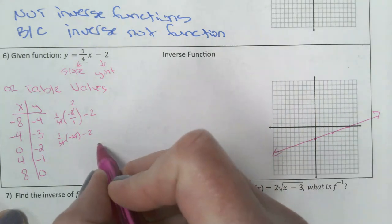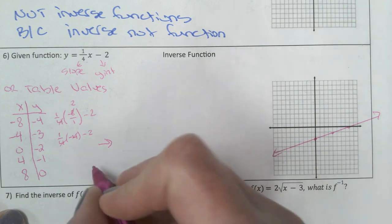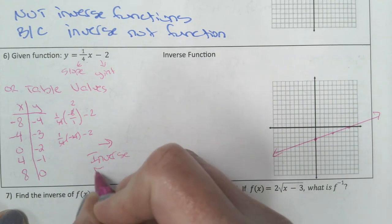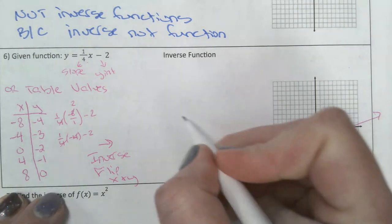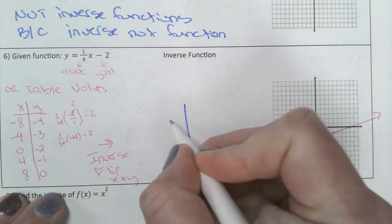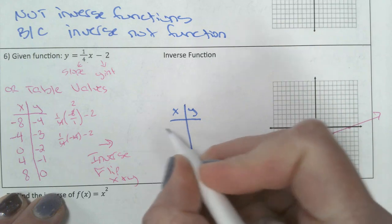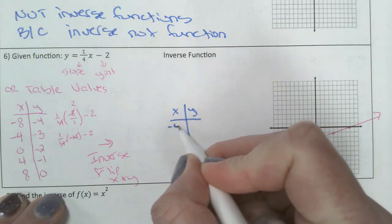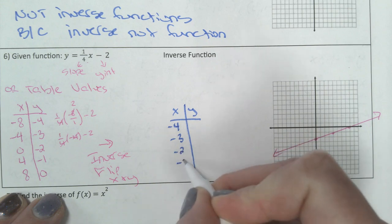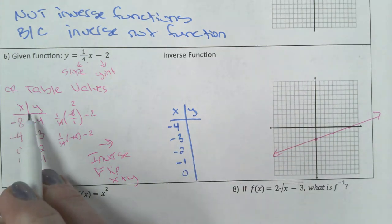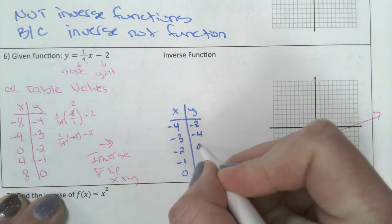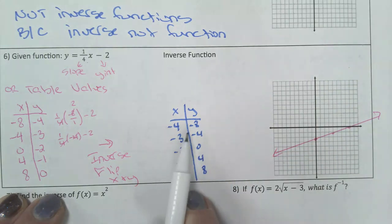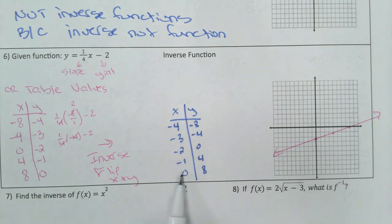When you want to find the inverse, you could just flip x and y. That is one option. So when I flip x and y, for my x column: negative 4, negative 3, negative 2, negative 1, 0. Those are the y's. And then the y column are the x's: negative 8, negative 4, 0, 4, 8. When you flip the x's and y's, I can see that this one is going to be a function because none of the x's repeat.